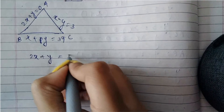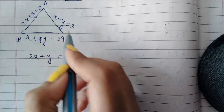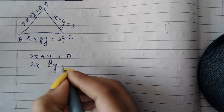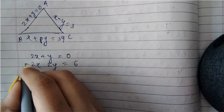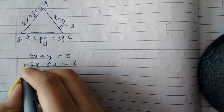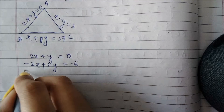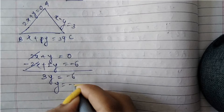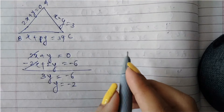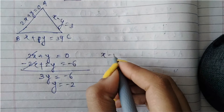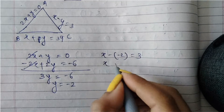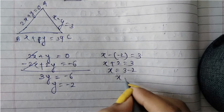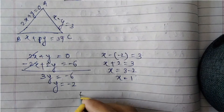Taking 2x plus y equals 0 and multiplying the second equation x minus y equals 3 by 2 gives 2x minus 2y equals 6. Multiplying by minus sign and adding, we get 3y equals minus 6, so y equals minus 2. Substituting back: x minus (minus 2) equals 3, so x plus 2 equals 3, giving x equals 1. The coordinates of A are (1, minus 2).